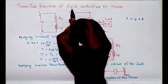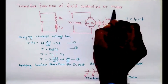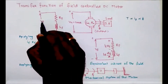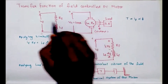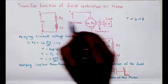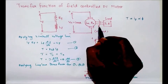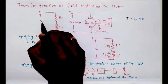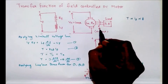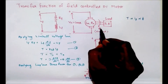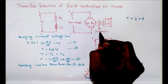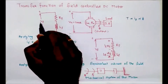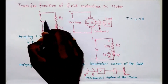This is a field controlled DC motor. Therefore field voltage is the variable quantity and armature voltage is constant. So if we vary the field voltage, the angular displacement will vary. Vf is the input and theta is the output. We have to derive the transfer function: Laplace transform of theta(S) divided by Laplace transform of input Vf(S).